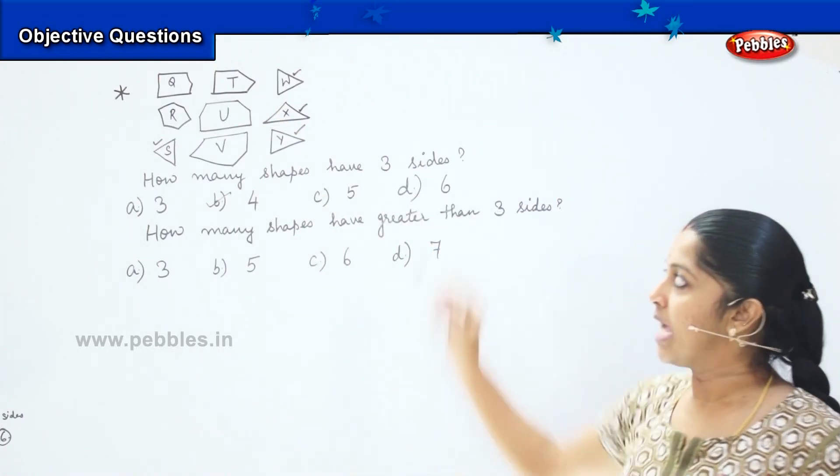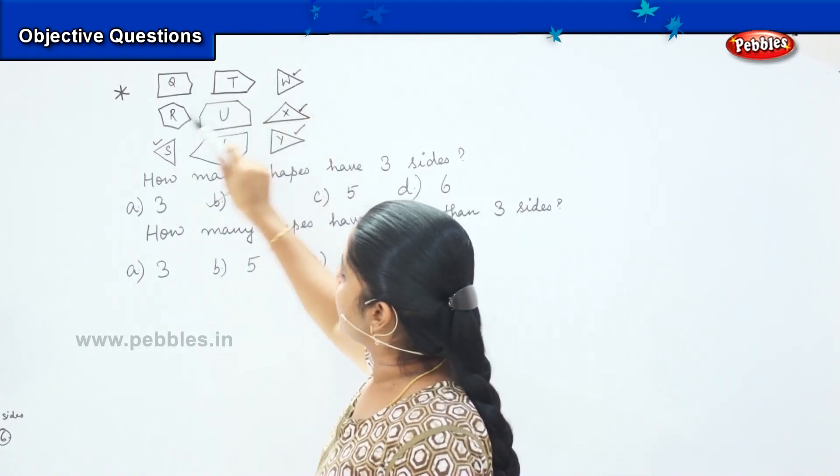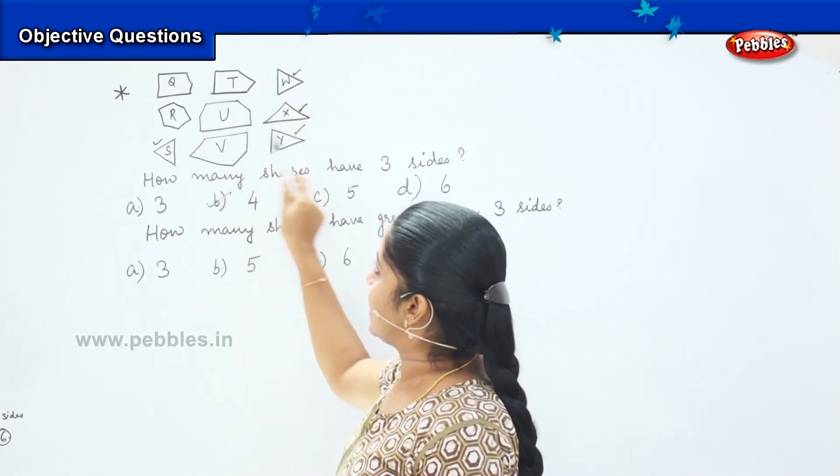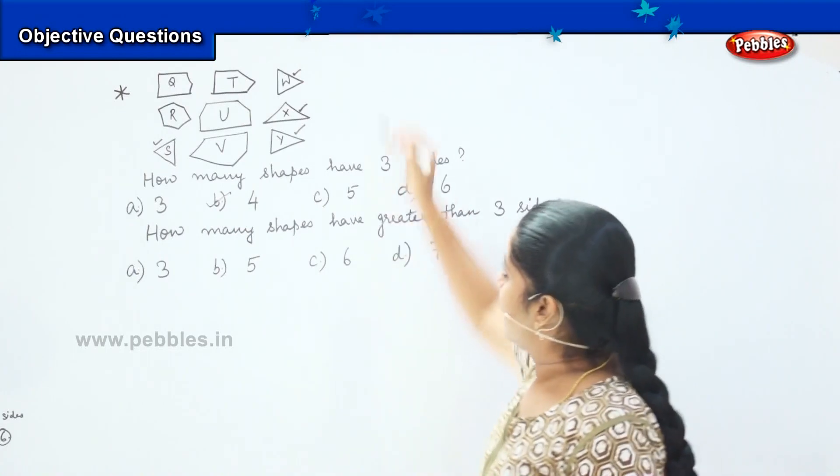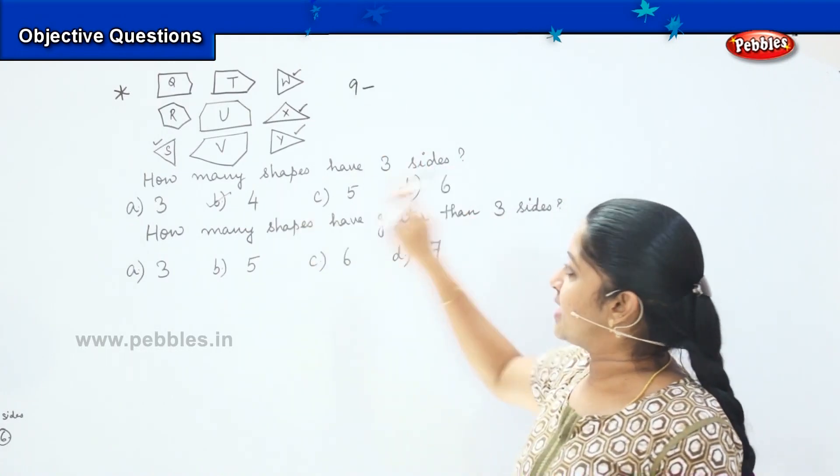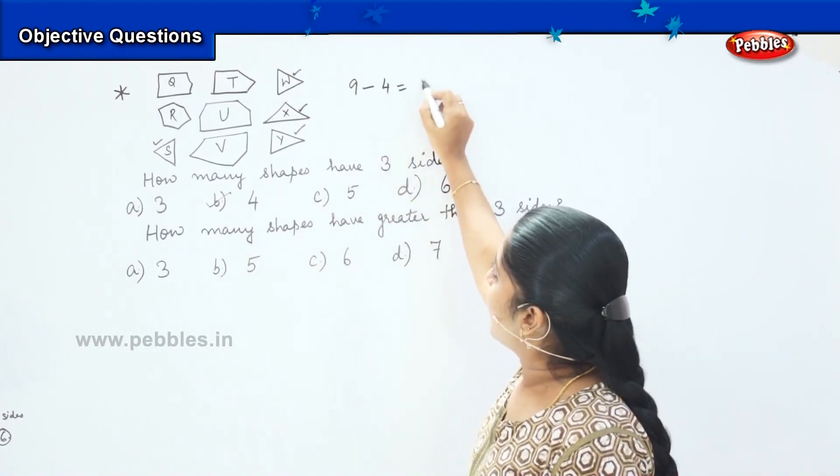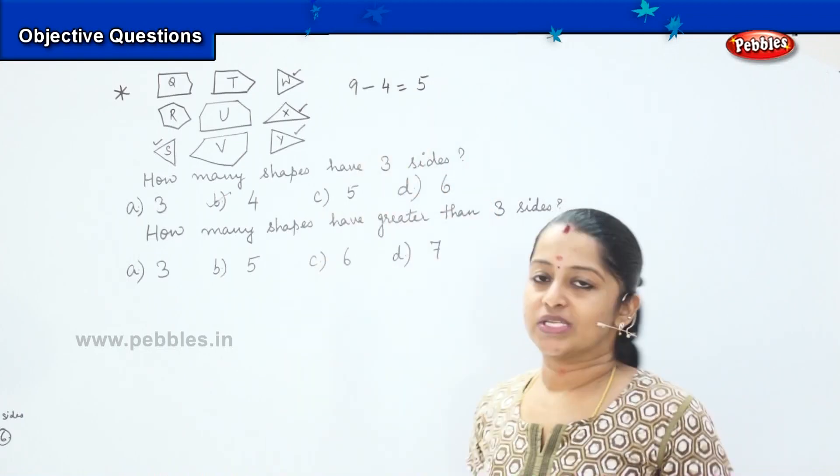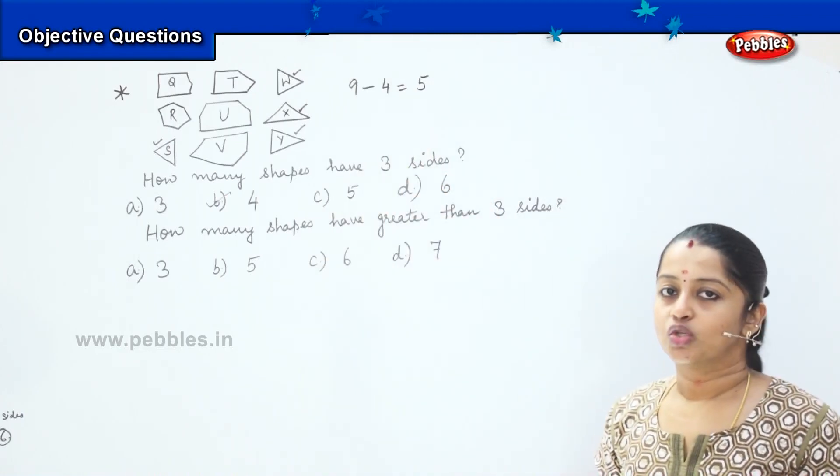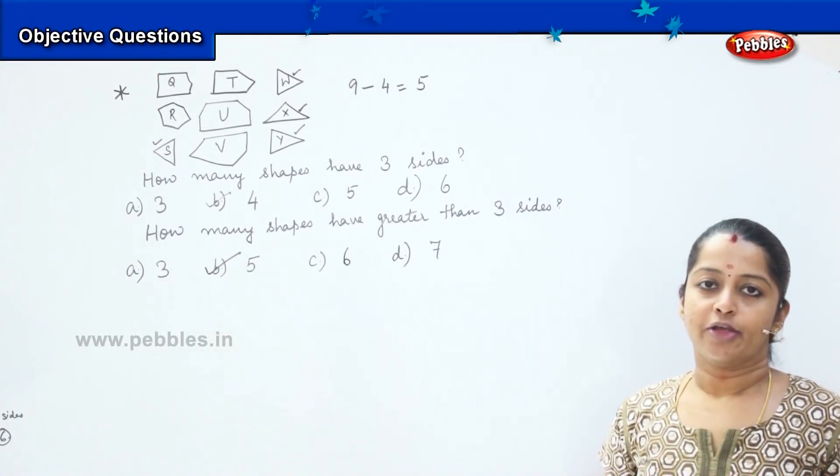Or the other way around is, how many figures are there? The total number of figures is one, two, three, four, five, six, seven, eight, and nine. So, there are nine figures in which, how many were having three sides, which is four. So, we have a balance of five shapes, which is having more than three sides. My right option will be option D, which is five.